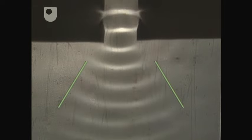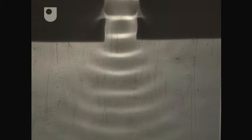This spreading out of a wave as it passes through an aperture is known as diffraction, and it's a property of all types of waves.